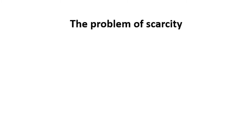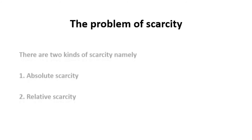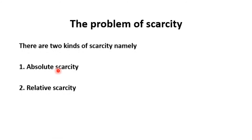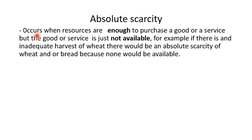There are two types of scarcity: absolute scarcity and relative scarcity. Absolute scarcity occurs when resources are enough to purchase a good or a service, but the good or service is not available.